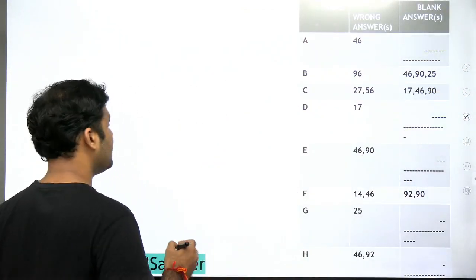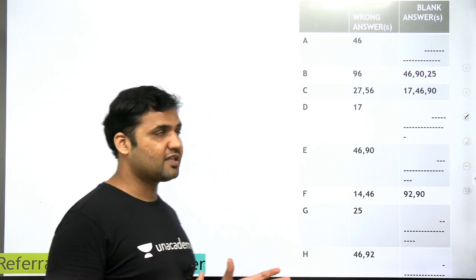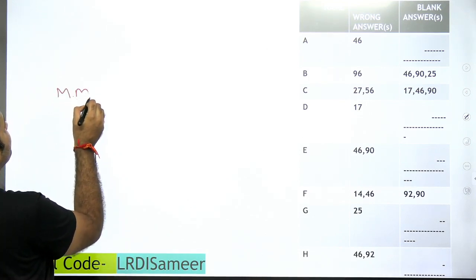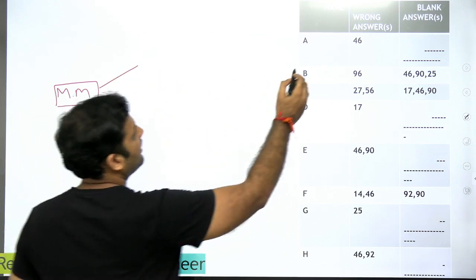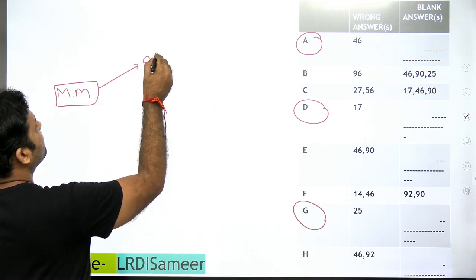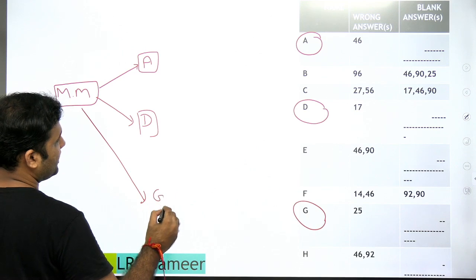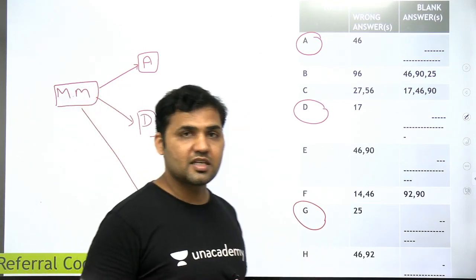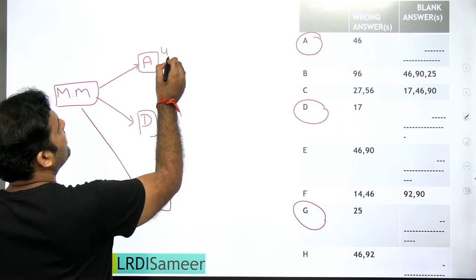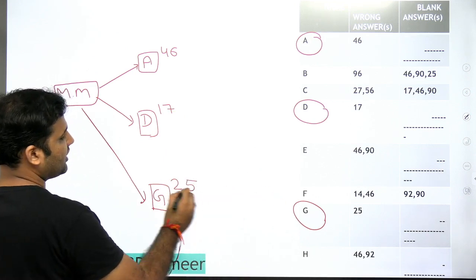So now let's start solving the set. You need to build a basic tree structure to know which person is forwarding the answer key to whom. You start from the mastermind. The mastermind is at the top, and A, D, and G are the three persons taking the answer key from the mastermind himself. A introduced wrong answer to question 46, D introduced wrong answer to question 17, and G introduced wrong answer to question 25.